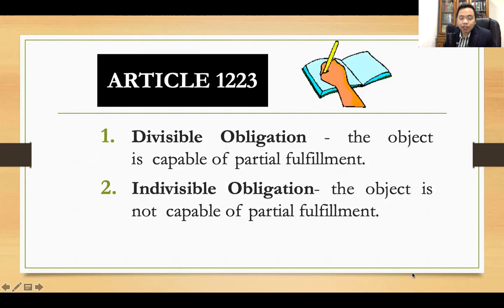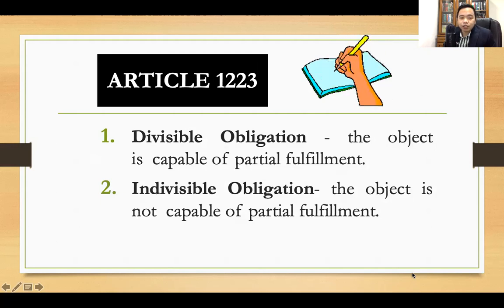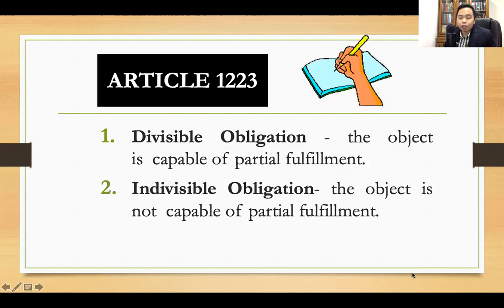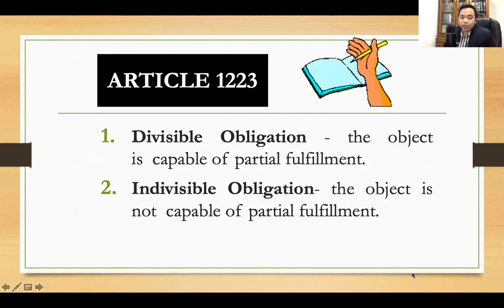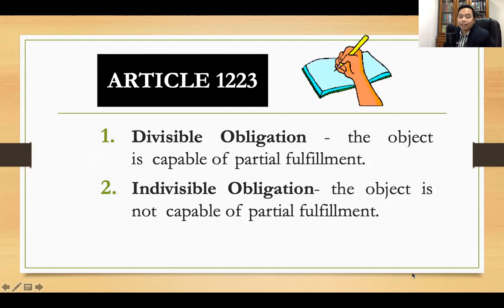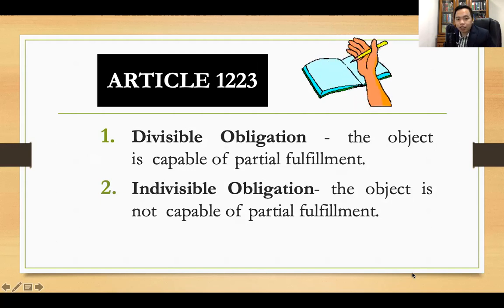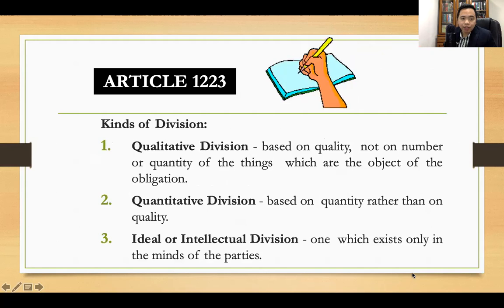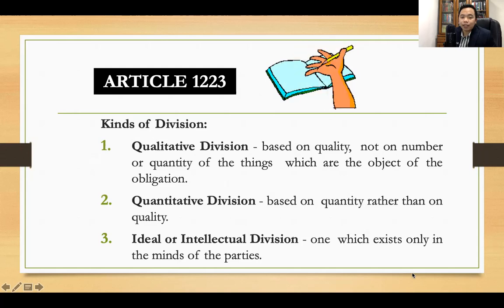Under Article 1223, you are confronted with two kinds of obligation according to fulfillment. If the object or the obligation is capable of partial fulfillment, then you call this a divisible obligation. On the other hand, an indivisible obligation is where the prestation is not capable of partial fulfillment. We also have the kinds of division: qualitative division, quantitative division, and ideal or intellectual division.